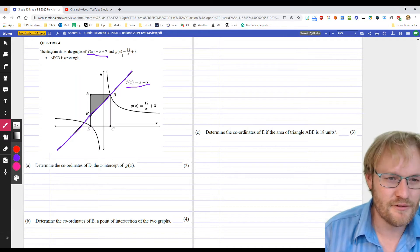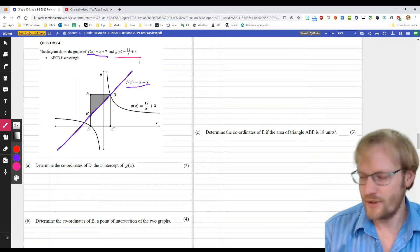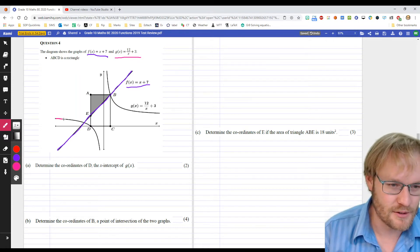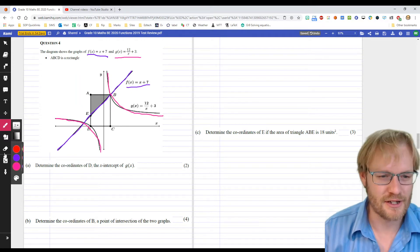And then our other function, G of X equals 12 over X plus 3, they've labeled it here, it's a hyperbola. So we highlight here, that's that graph, that's that part there.